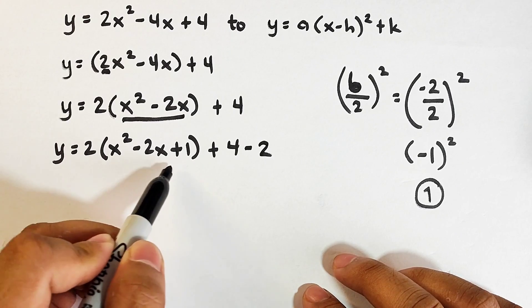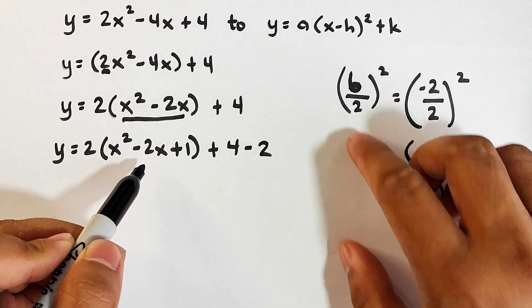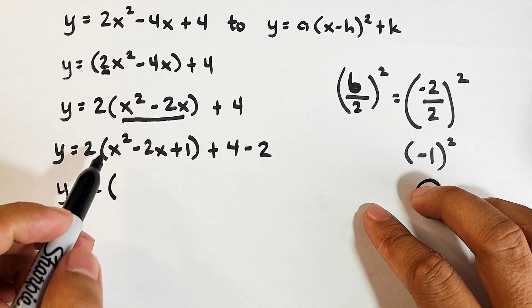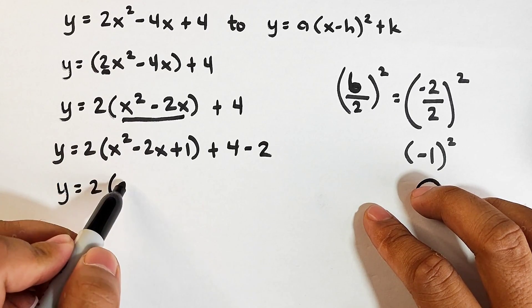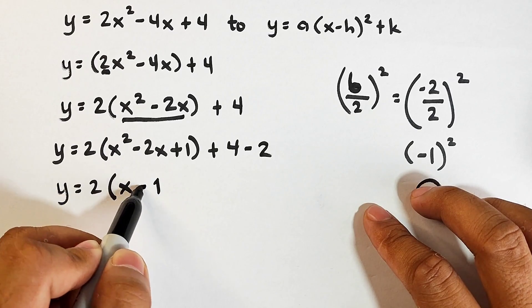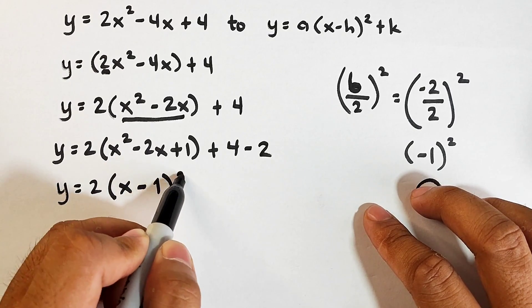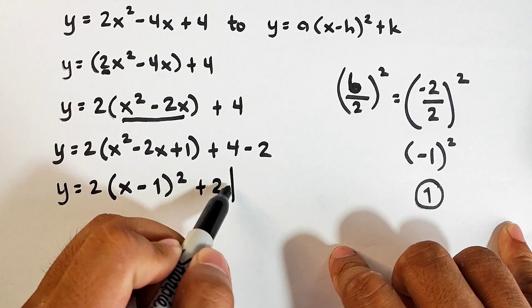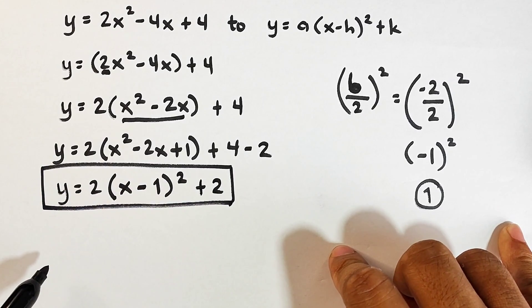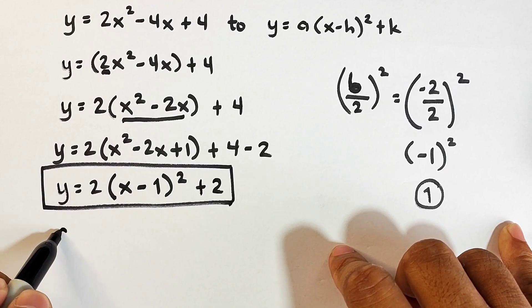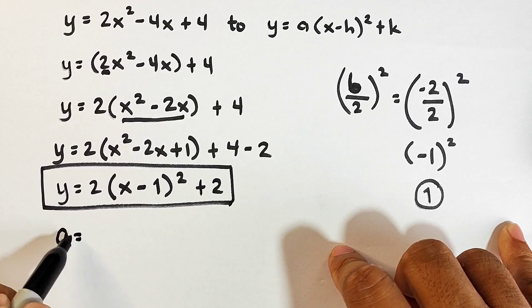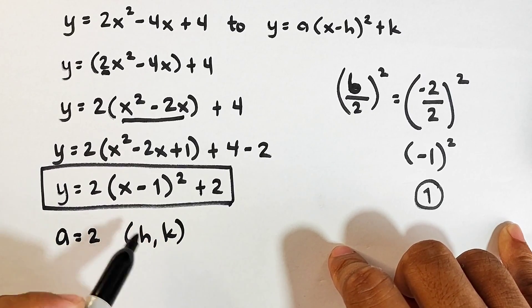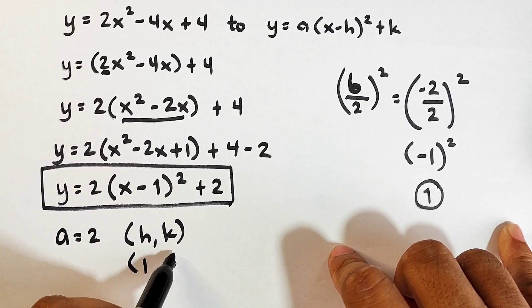And then, ito expressed natin bilang square of binomial. You have your y equals 2 times square root nito, x squared yung 1 is 1 minus kasi minus to. Then squared, 4 minus 2 is plus 2. And this is now the vertex form. Ngayon, if you want to identify your a, your a is equal to 2. The vertex h k is 1 and 2.